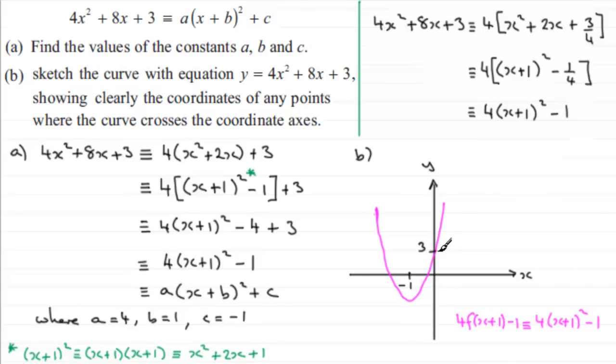What we need to find out, though, is this point and this point here, where it crosses the x-axis. So to find out what these two points are, what we need to do is set y equal to 0. So when y equals 0, what we have is 4x² then plus 8x plus 3 equals 0.